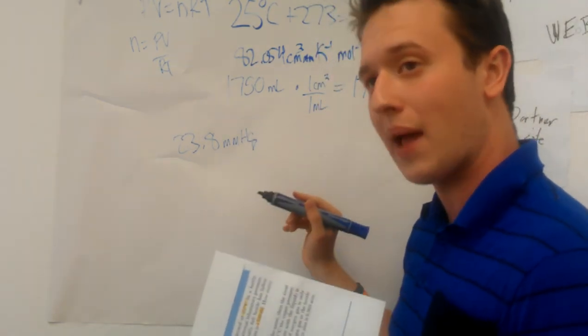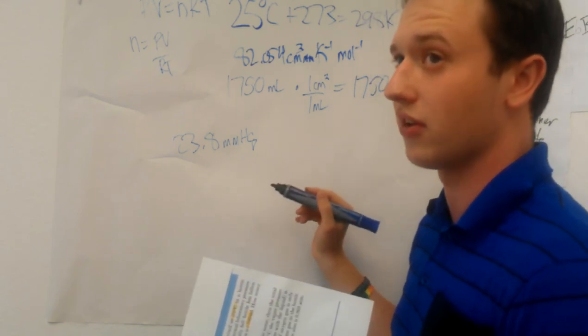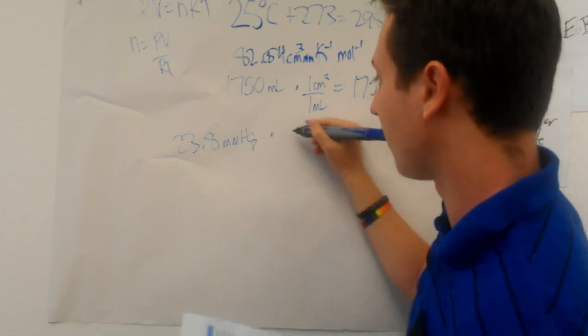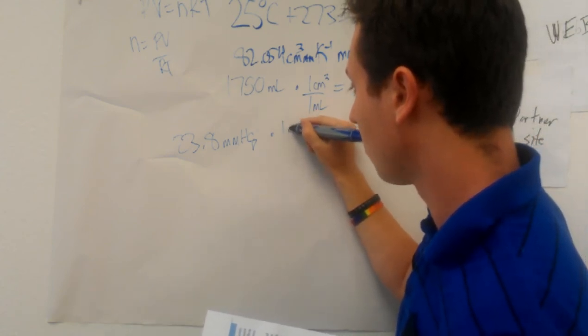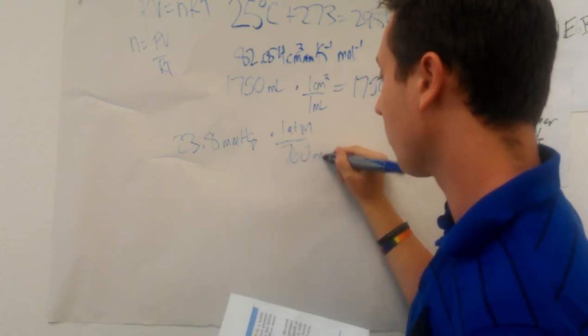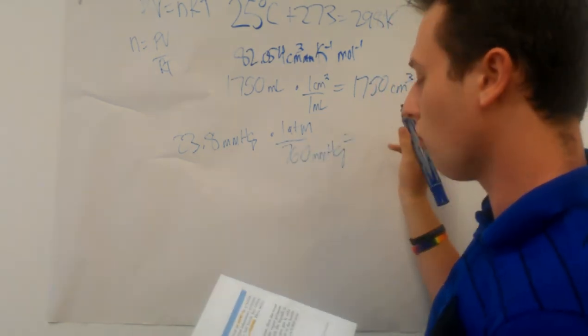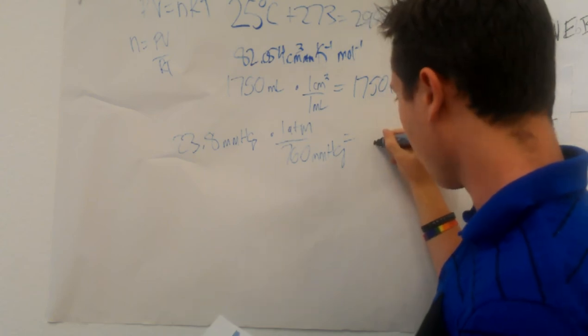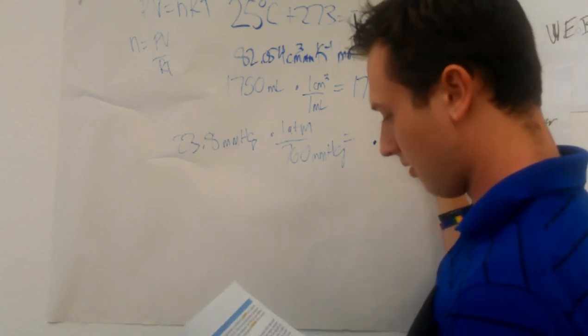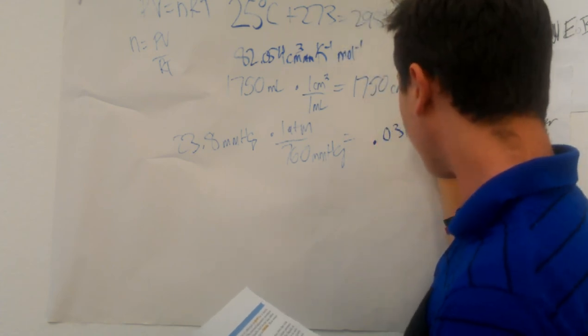Now, at one atmosphere, that is equivalent to 760 millimeters mercury. That's just something you're going to need to know. So let's do the basic conversion. One atmosphere over 760 millimeters of mercury equals 0.0313 atmospheres.